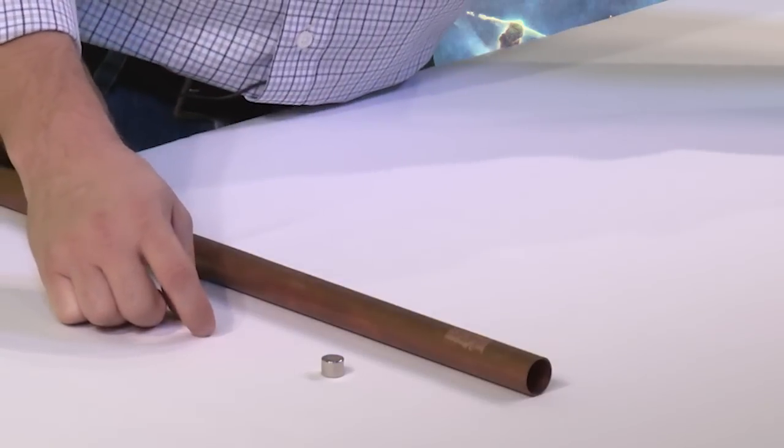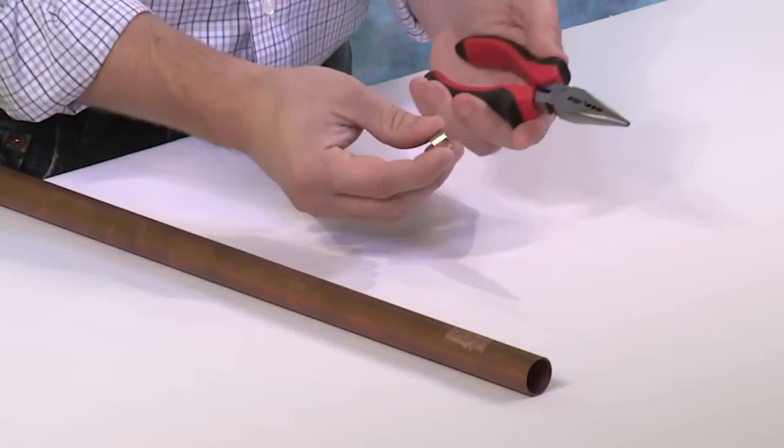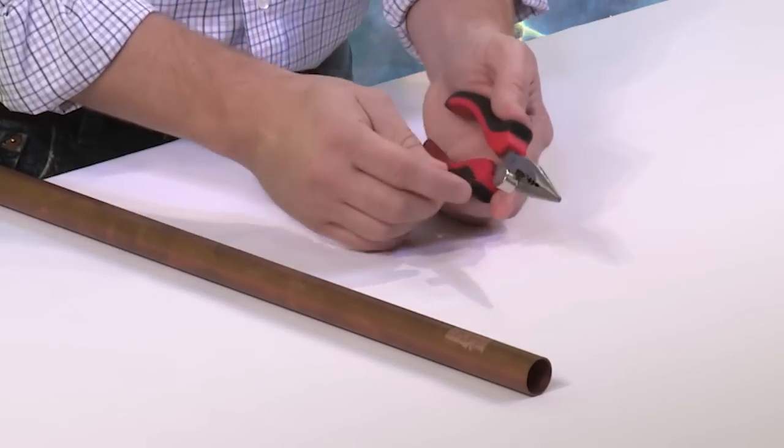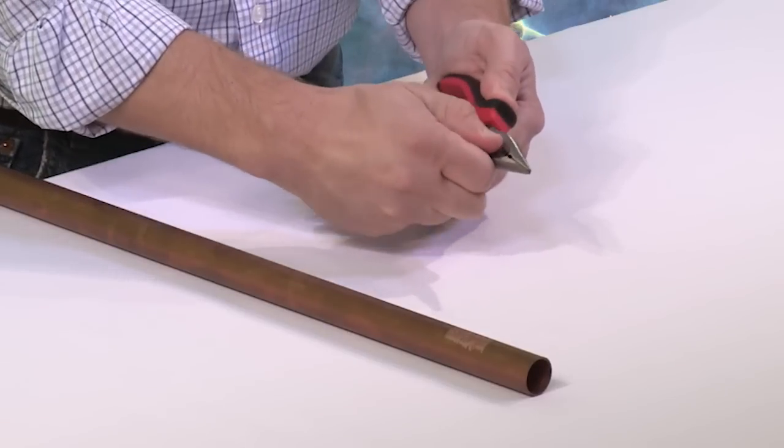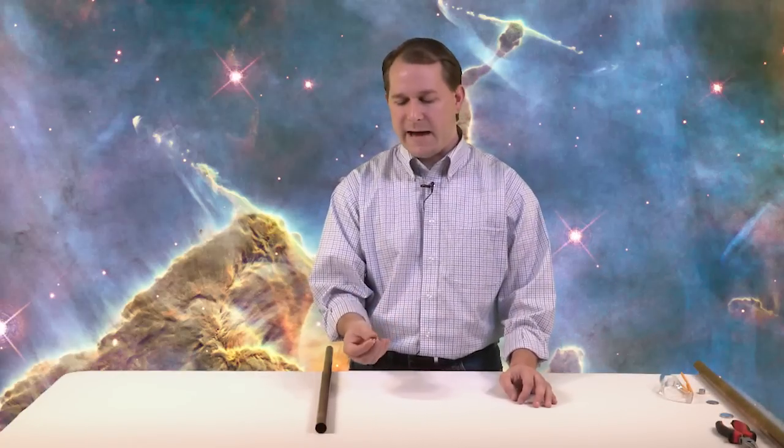Now before we get started, I just want to show you really quickly how strong this magnet is. This is a pair of pliers here. Whenever I attract it to the pliers, you can see it's attracted there. When I grab it and try to pull it off, this magnet is quite strong. And that's because of the special way that these magnets are made. You can buy these magnets for a couple dollars online. Just type in neodymium magnet or rare earth magnet and you'll be able to find them.